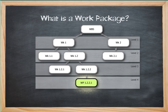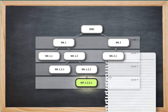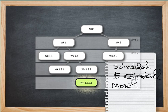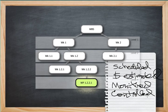So, what is a Work Package? According to the PMBOK Guide, the lowest-level WBS component has four specific characteristics: the work can be scheduled, cost-estimated, monitored, and lastly, controlled. You know you've got something defined at the lowest level as a Work Package if those four characteristics hold true.